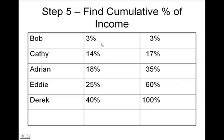Next, you take what each income earner earns and you calculate the cumulative percent of income. So 3 plus 14 was 17 percent, 17 plus 18 was 35 percent, and the cumulative percent of earnings adds up to 100 percent.